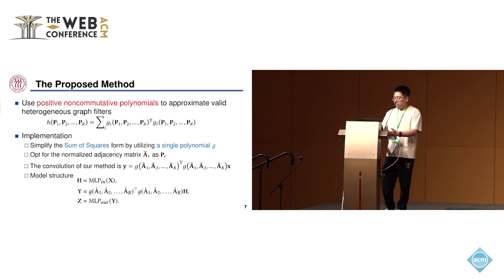So we propose a spectral heterogeneous graph convolution. It uses positive non-commutative polynomials to approximate valid heterogeneous graph filters. However, in practical implementation, learning multiple functions g_i is challenging. Therefore, we simplify the sum of squares form by utilizing a single polynomial g. It is an arbitrary non-commutative polynomial.